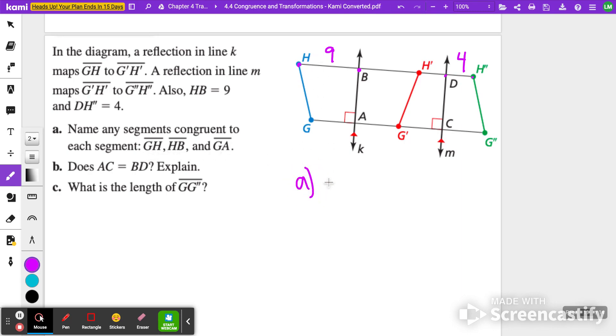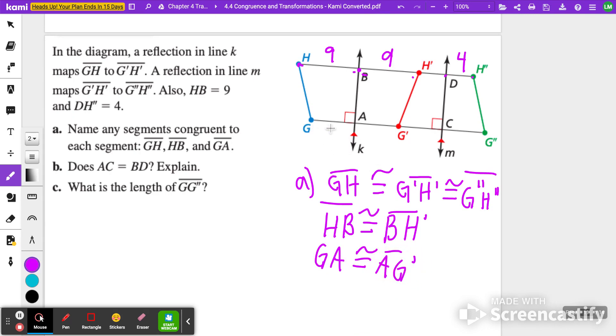So let's go ahead and do letter A here. GH is congruent to G prime H prime. And G prime H prime is congruent to G double prime H double prime. Those are all equivalent segments. They just have been reflected over two separate lines. Now let's look at HB. HB, which is here. That's equal to B to H prime. Or HB to BH prime. So here to here is the same thing as here to here, which means this is now equal to nine. And then the other one, GA is the same thing as A to G prime, because a line of reflection is going to be the same distance it is from one point to the other side.